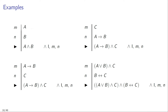Here are various examples of correct applications of the rule conjunction introduction. If in one line of your proof you have the sentence A and in a different line you have the sentence B, you can infer A and B. Similarly, if in one line you have the sentence 'if A then B' and in a different line you have the sentence C, you can infer the conjunction 'if A then B and C' and justify this using conjunction introduction applied to lines M and N.